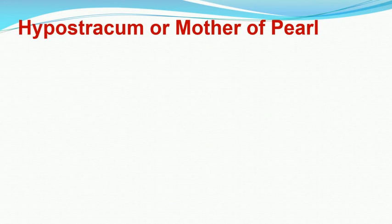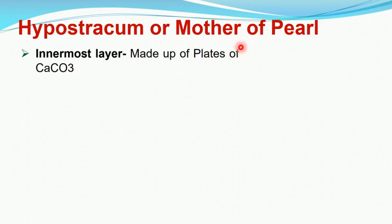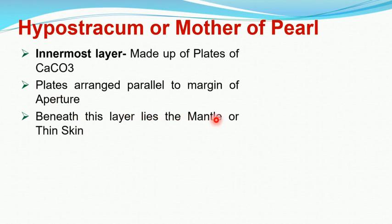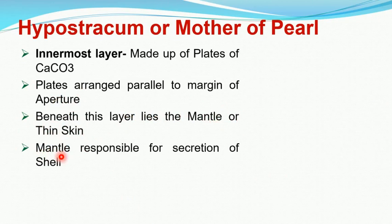The innermost layer of the shell is known as the hypostracum, nacreous layer, or mother of pearl. It is also made up of plates of calcium carbonate, but these plates are arranged parallel to the margin of the aperture. Beneath this layer lies the mantle, which is a fold of skin. The mantle is responsible for the secretion of the shell and is present below the hypostracum.